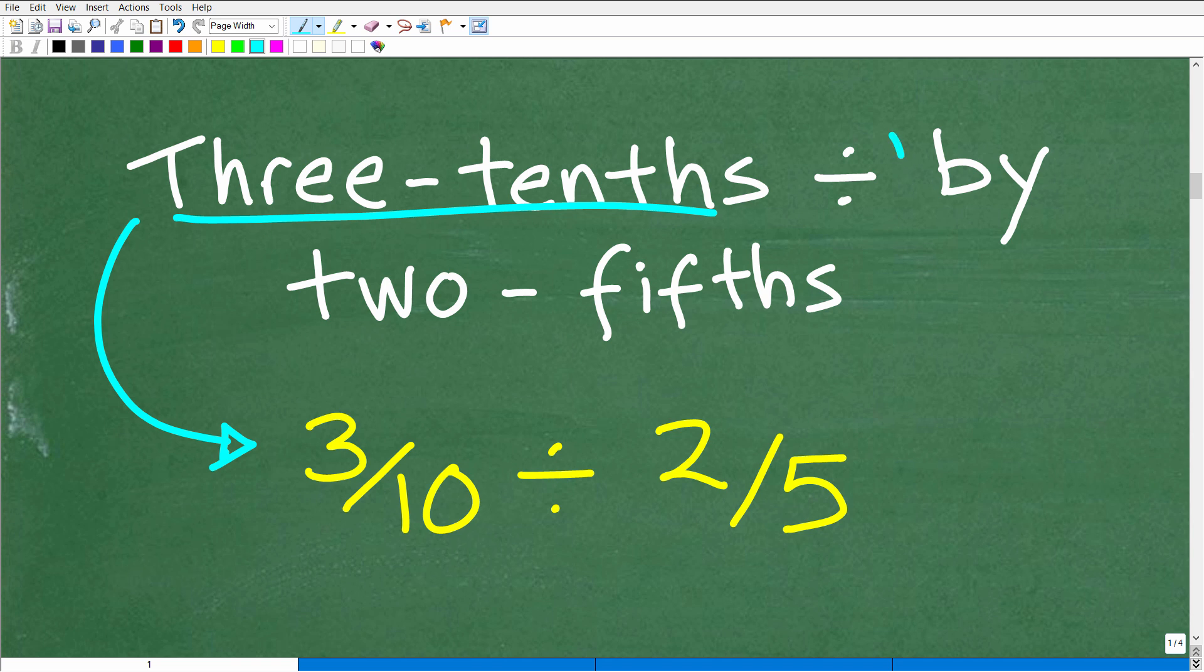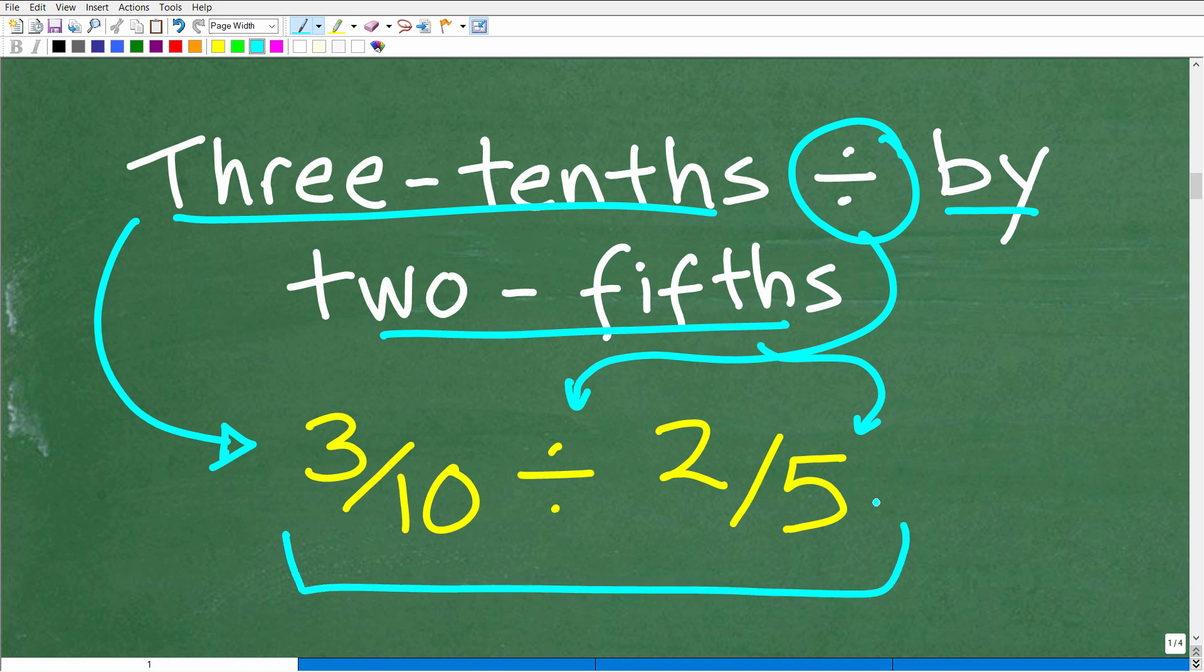All right, so we have 3 tenths divided by, so here's that division symbol, by 2 fifths. All right, so really what we're doing here is translating a verbal math problem into an actual math problem with numbers, okay? So we have some choices whether we're going to work with decimals and fractions. So I'm going to suggest that you work all with fractions. Okay, so this is the problem that we're going to do. So 3 tenths divided by 2 fifths, how do you do this problem?